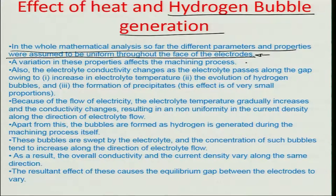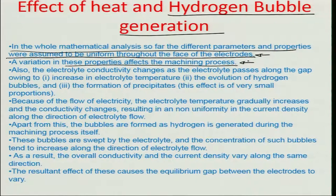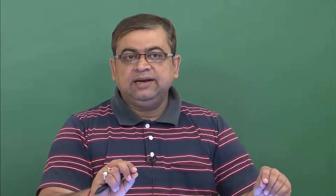A variation in these properties affects the machining process. Supposing hydrogen is getting generated the moment the electrolyte enters between the two electrode work piece surfaces, and as the electrolyte goes ahead hydrogen keeps on adding and the concentration keeps on increasing. So obviously there is going to be a gradient in the hydrogen concentration and a gradient in the conductivity because of such processes.